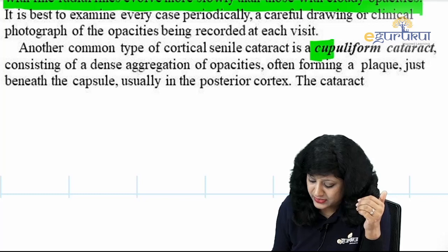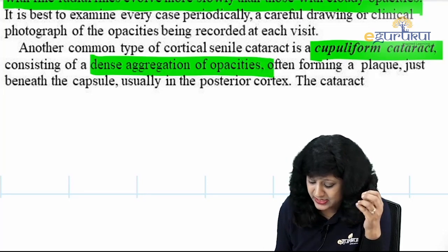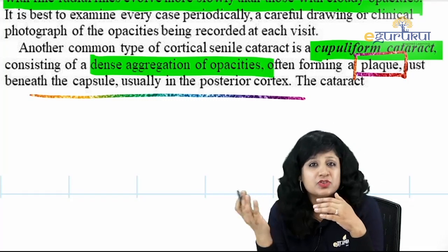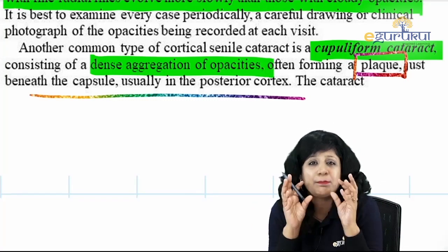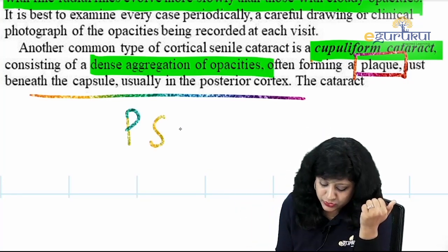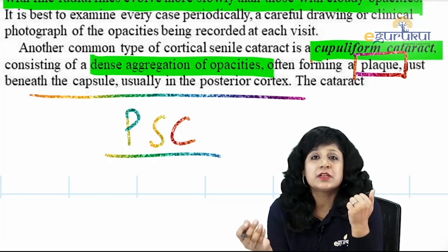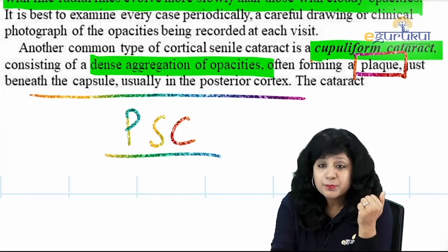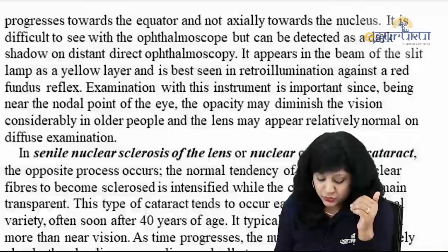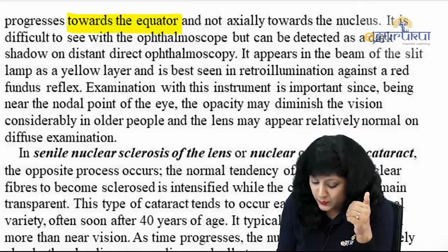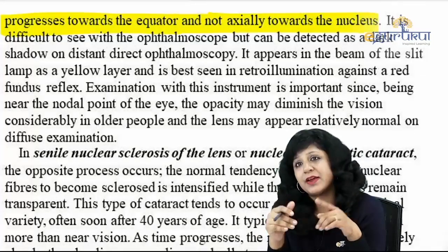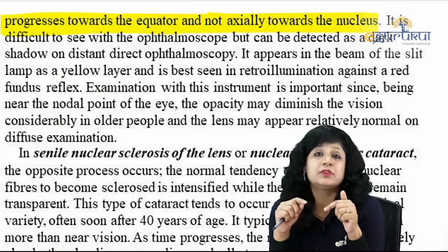Another common type of cortical senile cataract is the cupuliform cataract — a dense plaque usually in the center of the posterior cortex beneath the capsule — also called posterior subcapsular cataract. For all practical purposes, cupuliform cataract and posterior subcapsular cataract are the same. Its development progresses from the center towards the equator, not axially towards the nucleus. In cuneiform cataract, opacification starts from the periphery going towards the nucleus; in cupuliform, it starts from the center going towards the equator.